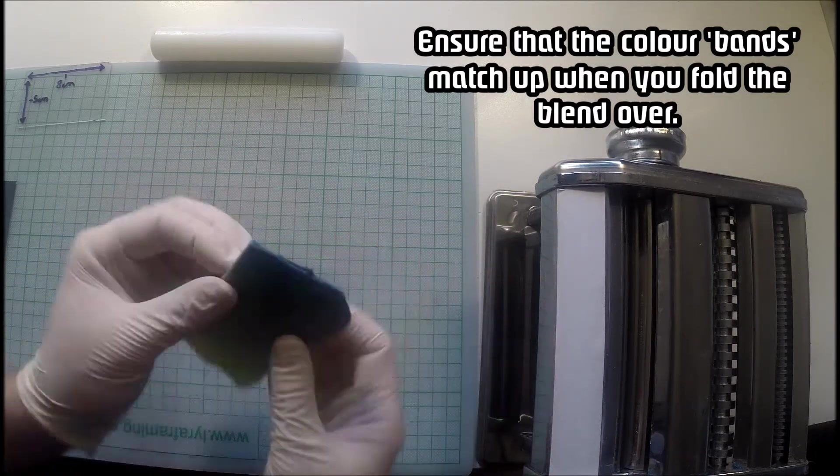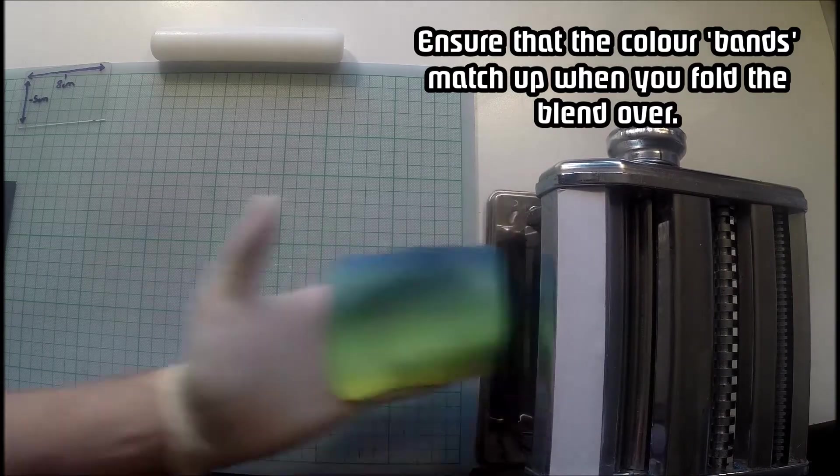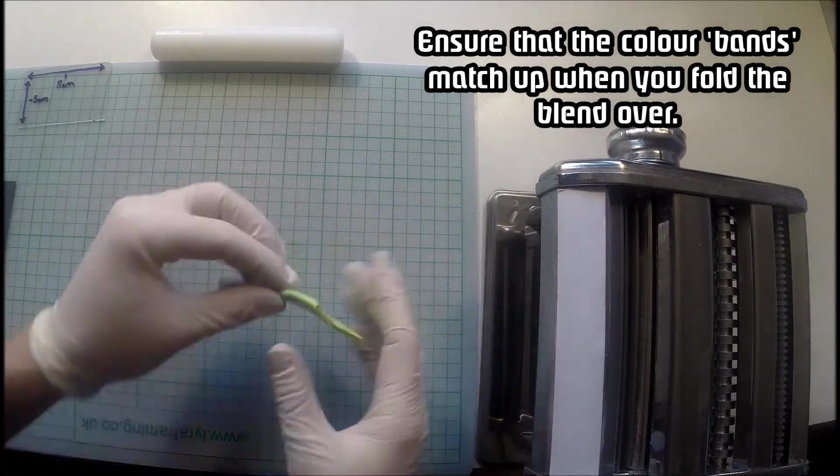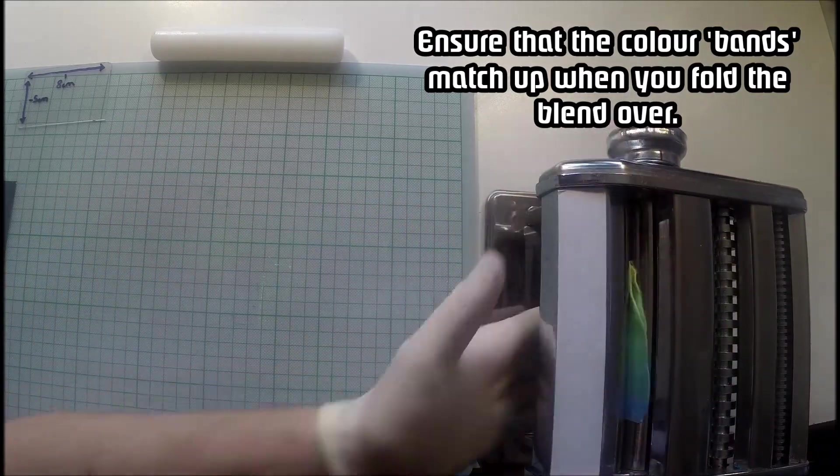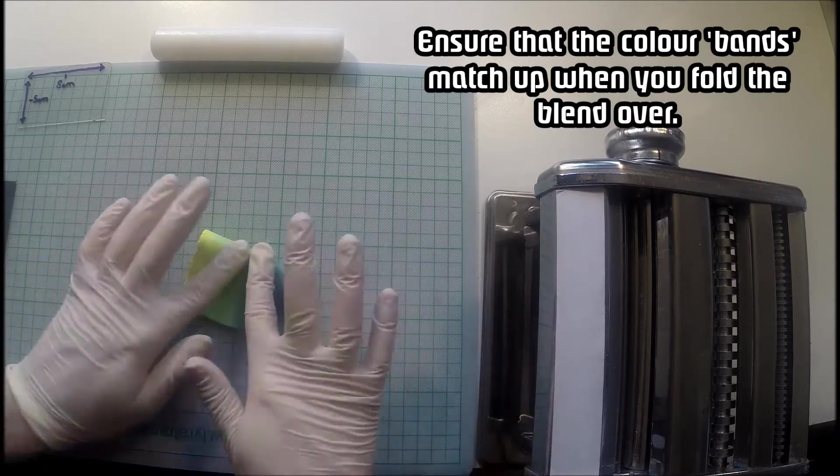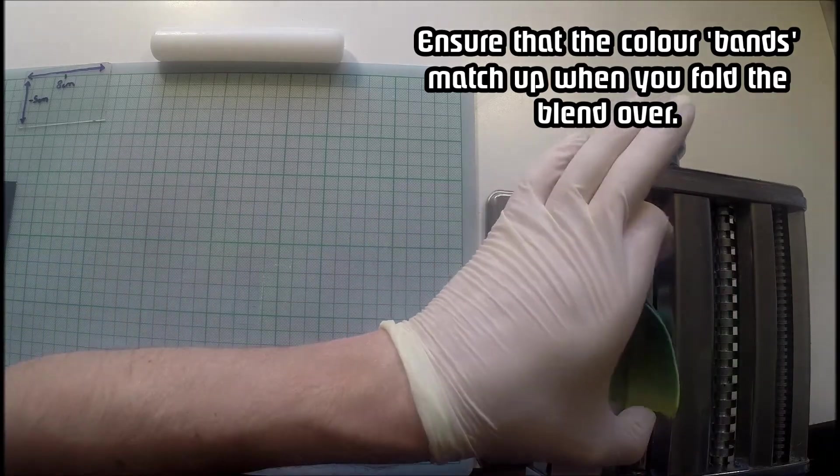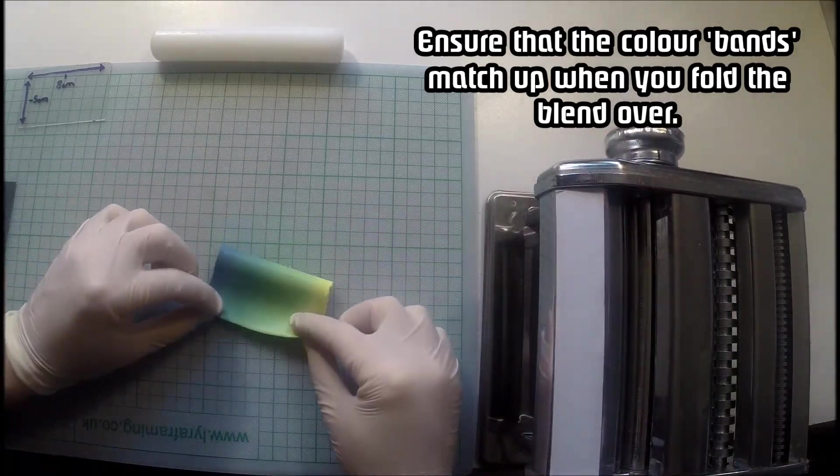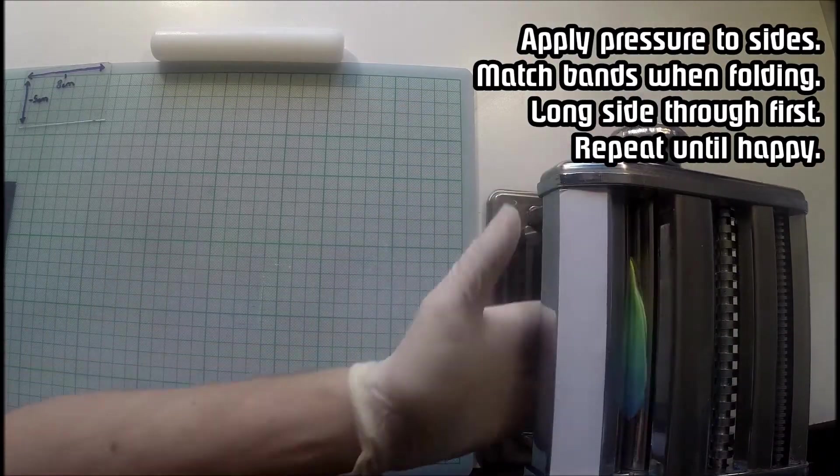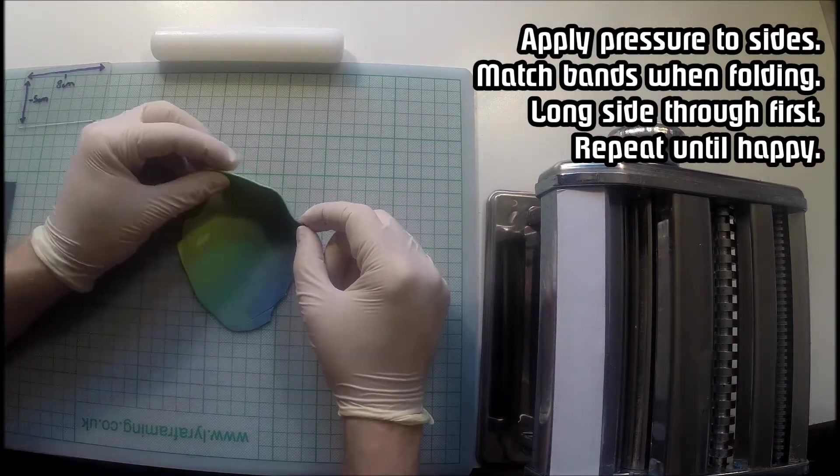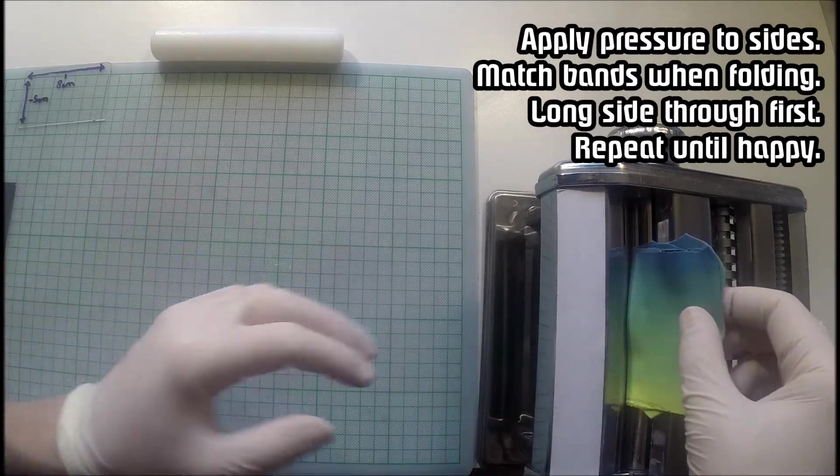I think it is worth mentioning at this point that there is no set number of times that you need to put a Skinner Blend through the rollers. It can be anything from five times to a hundred times to fifty times to whatever you want. It's a creative process so you can put it through the roller until you come out with something that you can say hey yes this is exactly what I want.